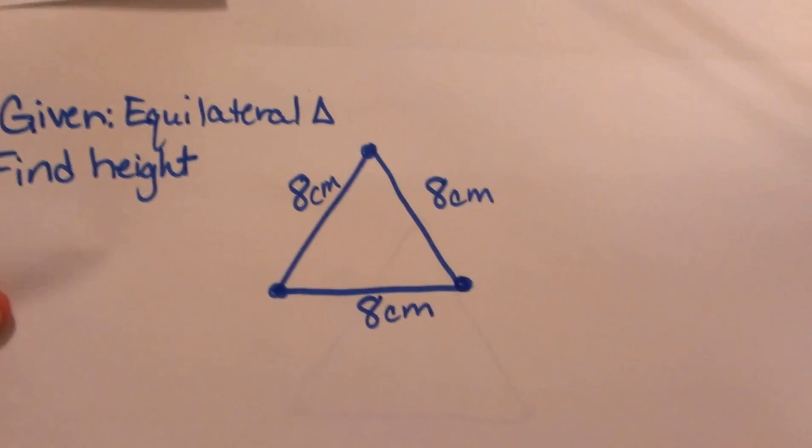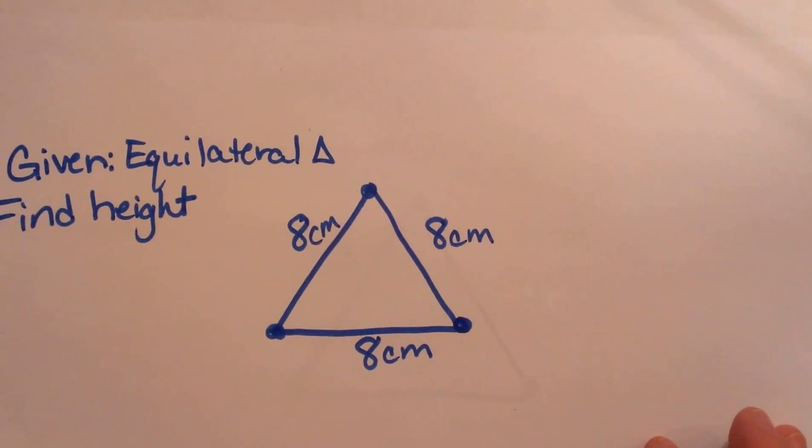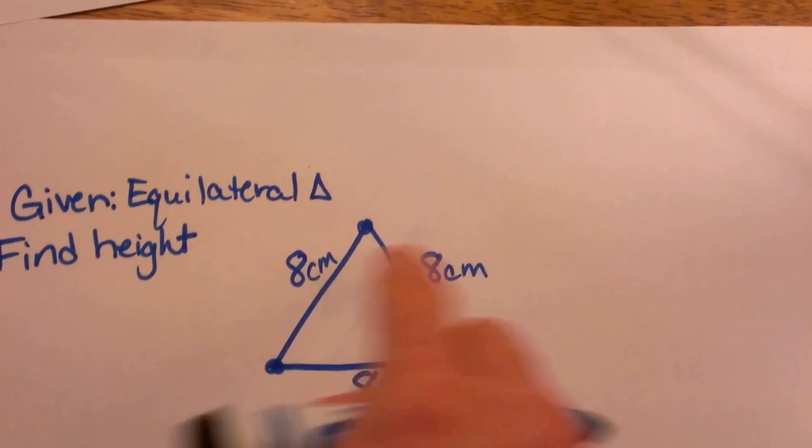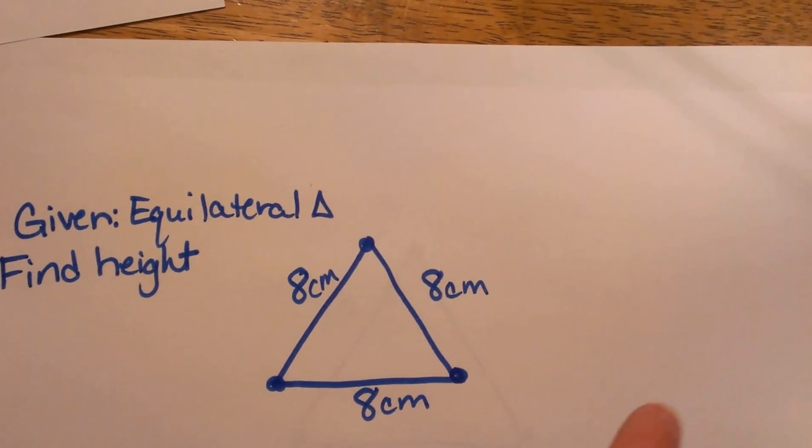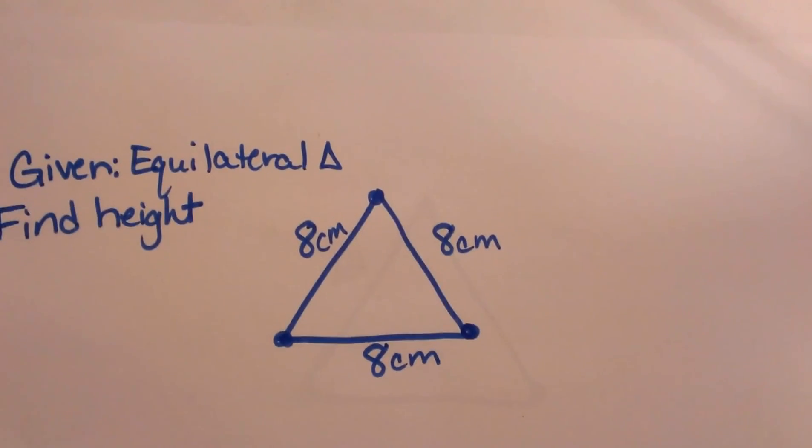This time we are going to be given an equilateral triangle. We have to find the height and each side is 8. So again I am going to draw in my altitude.